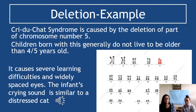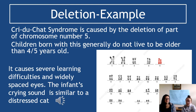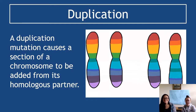An example of deletion is Cri du Chat syndrome, caused by deletion of part of chromosome number five. In the diagram, chromosome five is highlighted — the chromosome on the right of the pair is shorter than the one on the left, showing part of it has been deleted. Children born with this generally don't live beyond four or five years old, as it results in severe learning difficulties and other medical issues. The name comes from the infant's cry sounding similar to a distressed cat.